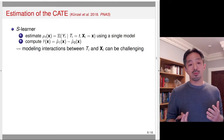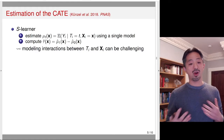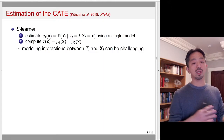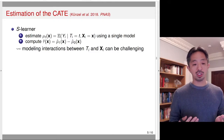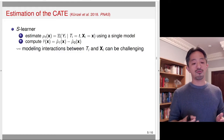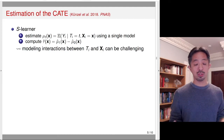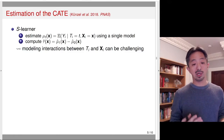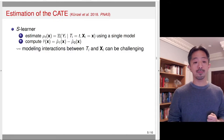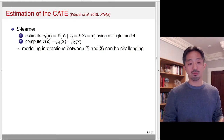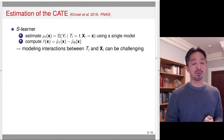This means you have to model interactions between the treatment and the covariates — you hold x constant, change t from 0 to 1, and take the difference. This can be challenging. Often the interactions have a much weaker signal than the main effects. For example, if you naively run LASSO regression, the interaction terms will often be reduced to zero and you don't detect heterogeneity. That's one challenge of S-Learner, though it's a simple approach using a single model.